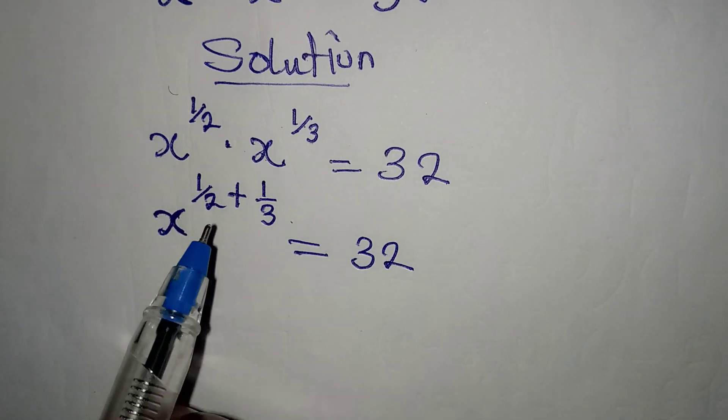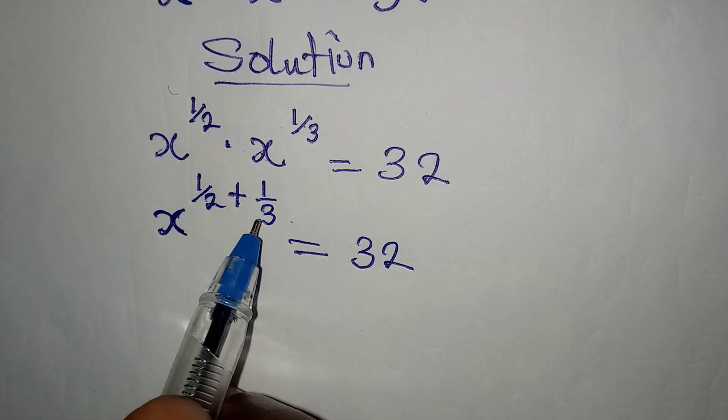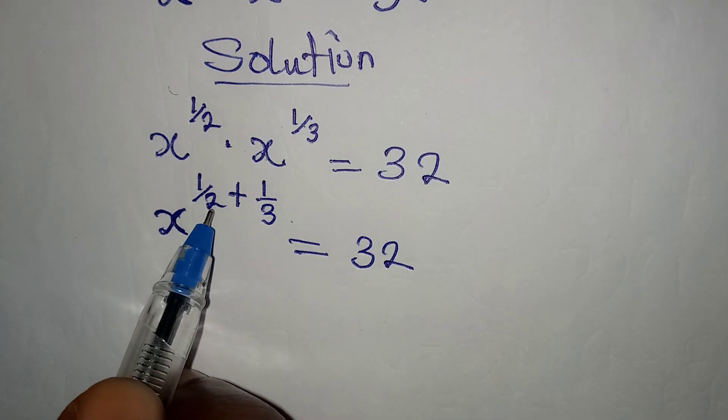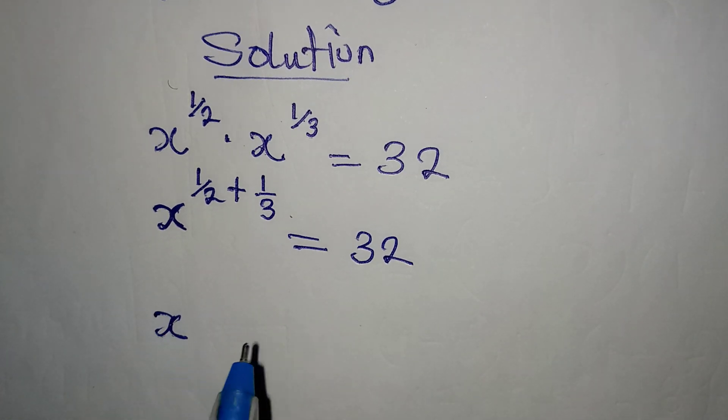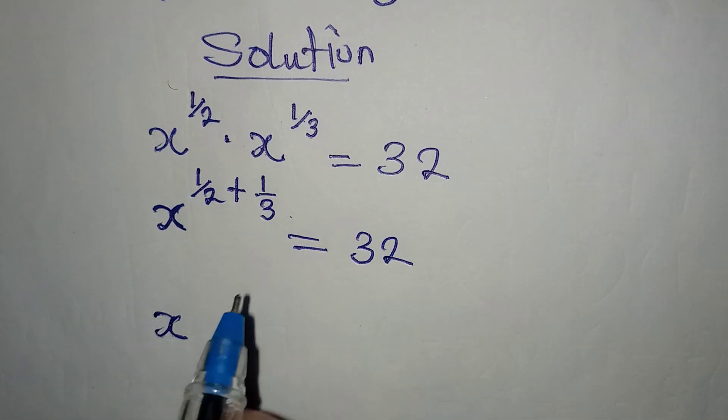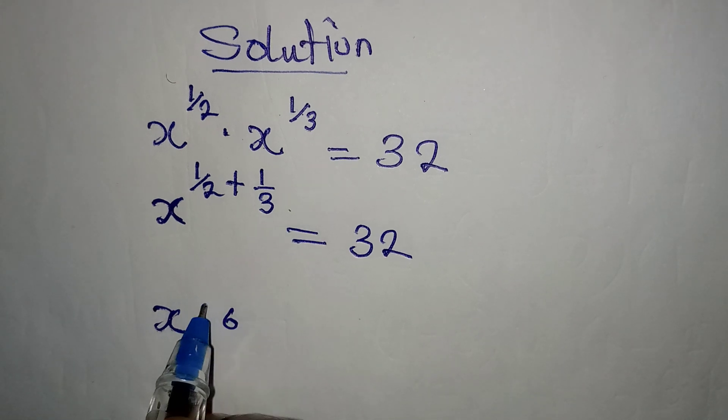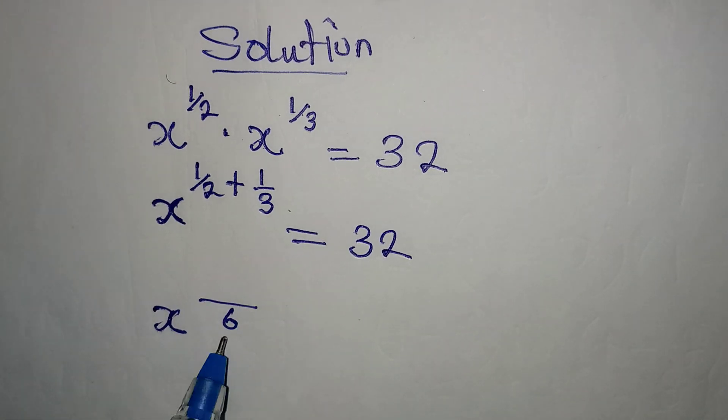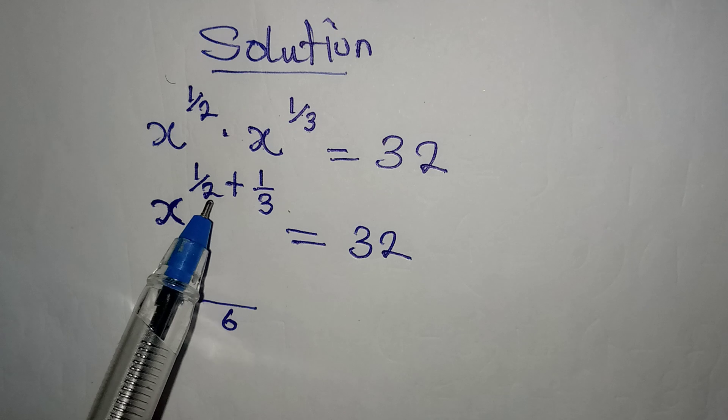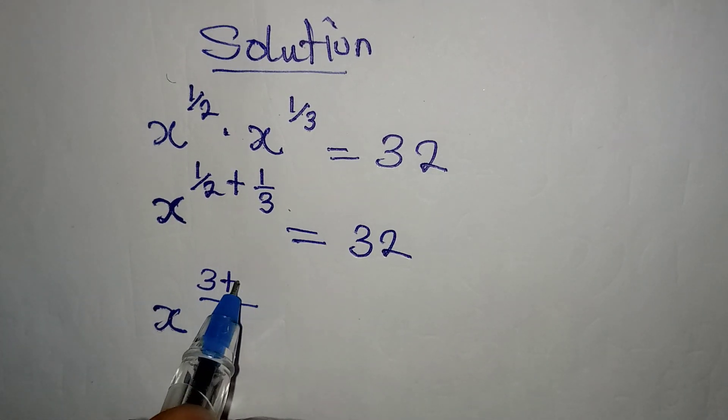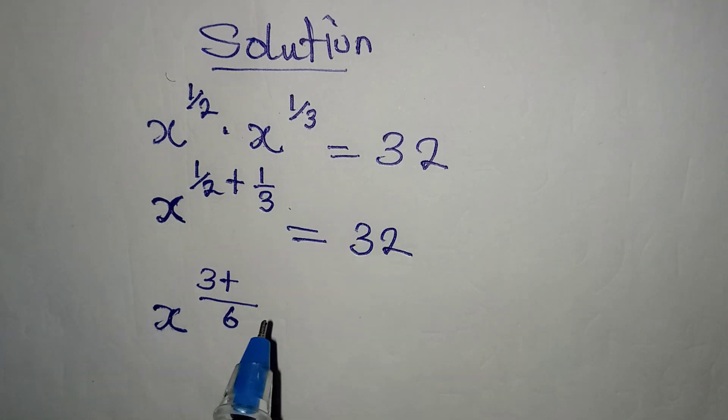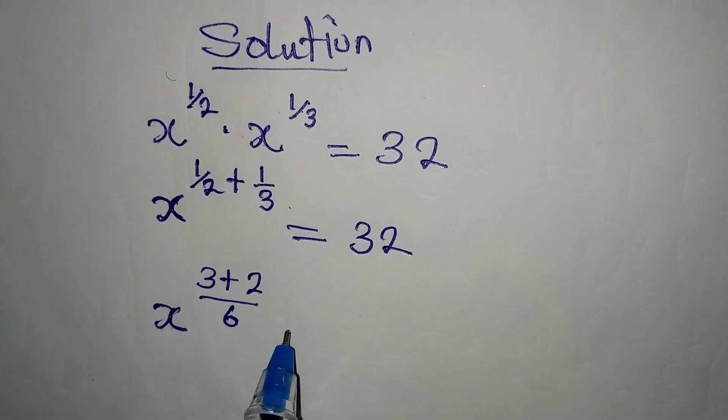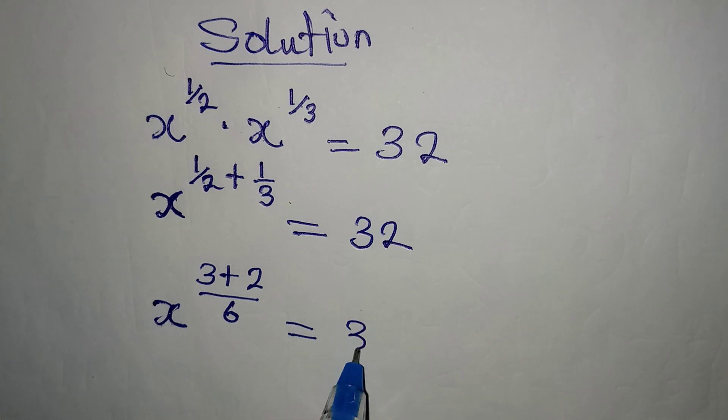Now to add the powers here, we will find the LCM of 2 and 3. So we are going to have x to the power of, the LCM of 2 and 3 is 6. Then we have 6 divided by 2 is 3 times 1, we have 3, plus 6 divided by 3 is 2 times 1, we have 2. And this is equal to 32.